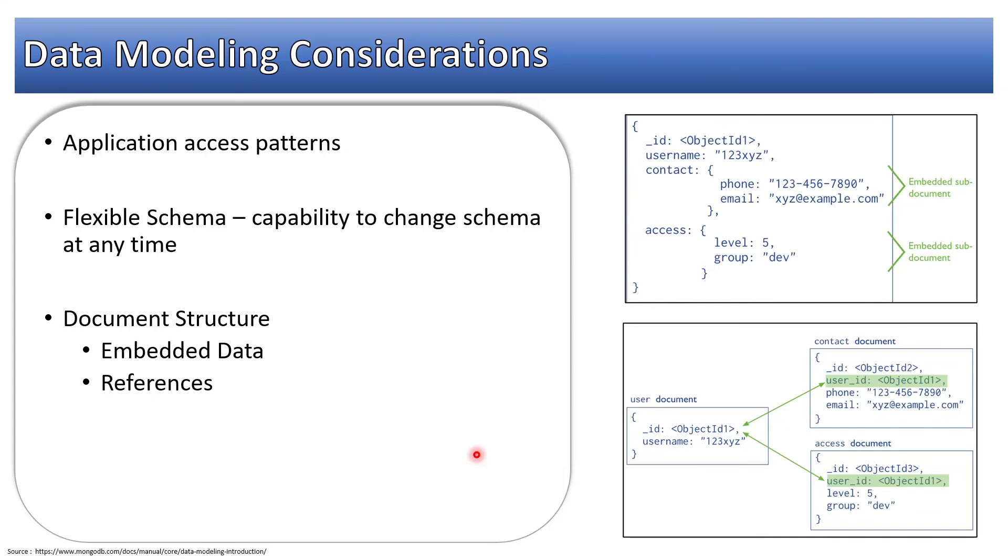Data use and performance will also be an important factor because you should know how your data is going to be used and what performance you want from your database. It might be the case that you want millisecond latency, or you want the response in two seconds, or it is fine if MongoDB returns the response in five seconds. Based upon these considerations, you can efficiently design your MongoDB schema.